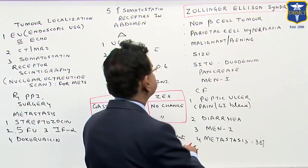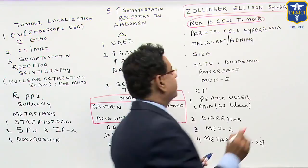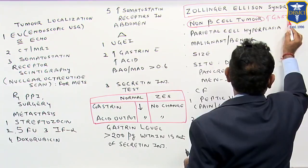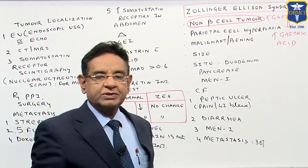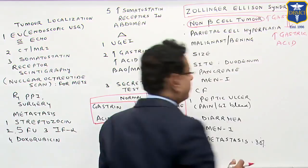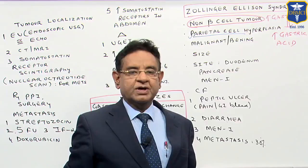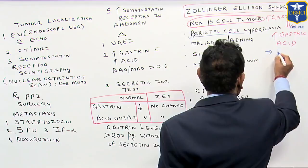In ZES, it is a non-beta cell tumour and this tumour secretes a large amount of gastrin, which leads to increased secretion of gastric acid. This leads to hyperacidity, and because of the high amount of gastrin, parietal cell hyperplasia occurs — that is the factor which leads to a high amount of acid in the stomach. A high amount of acid in the stomach is definitely a very strong predisposition for peptic ulceration.